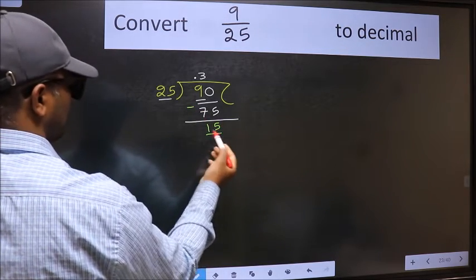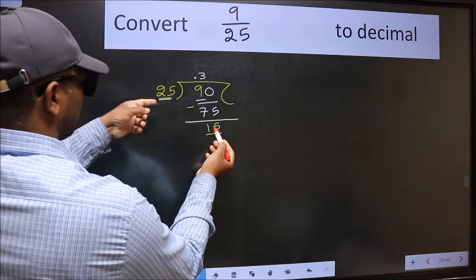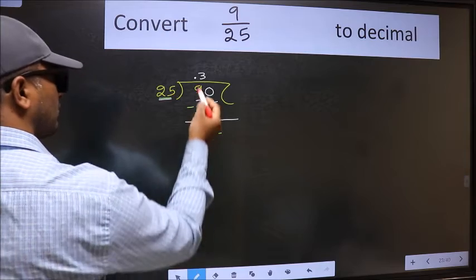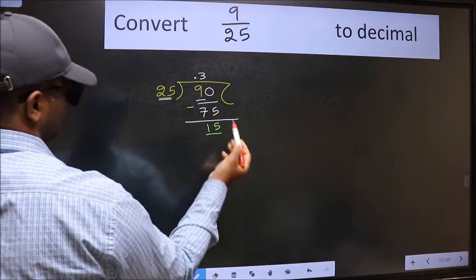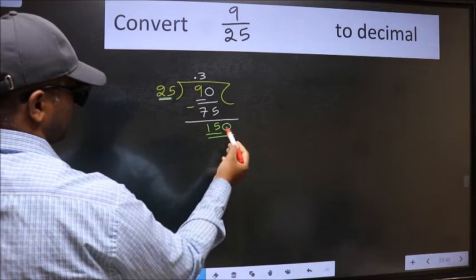Now, here we have 15 and here 25. 15 is smaller than 25, and we already have the decimal. So this time you directly take 0. So, 150.